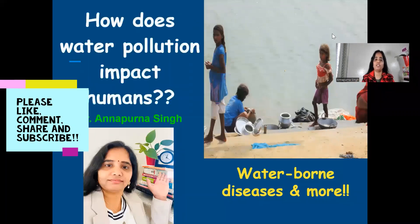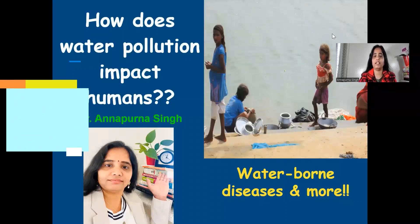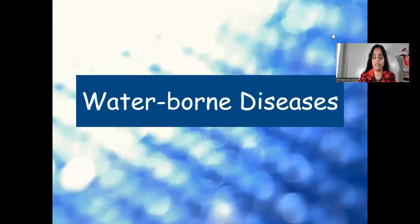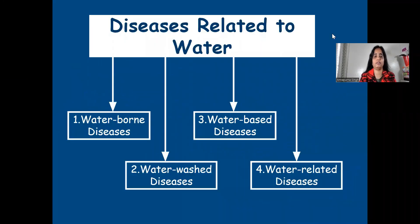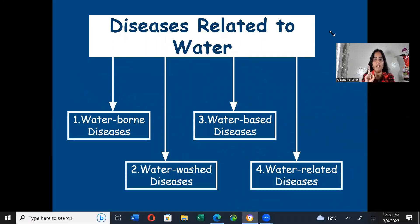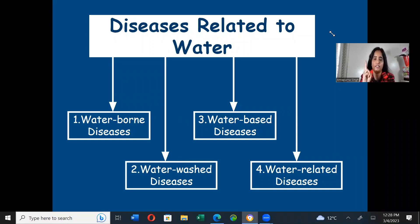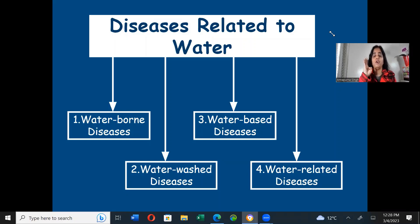How does water pollution impact humans? Let's look at this topic in detail. Number one is waterborne diseases, number two is water-washed diseases, number three is water-based diseases, and number four is water-related diseases.